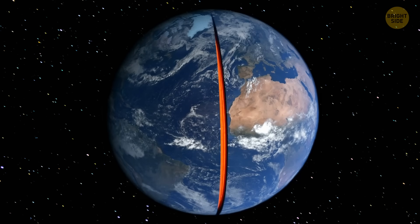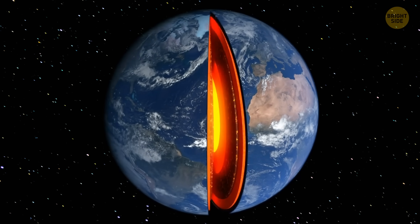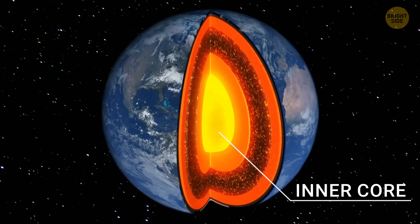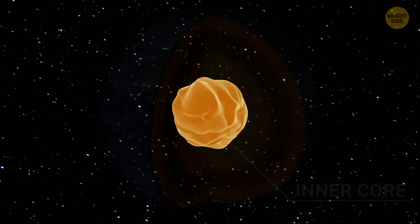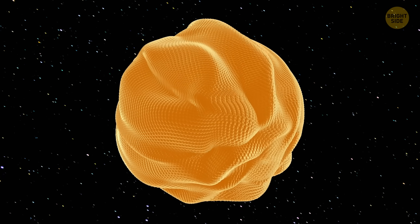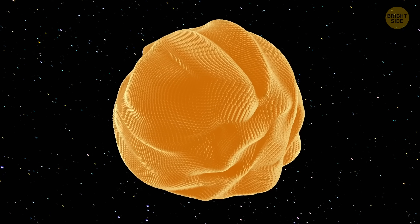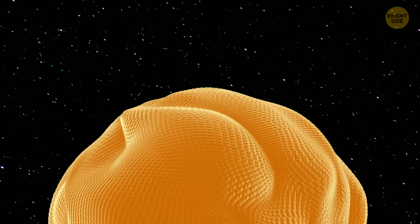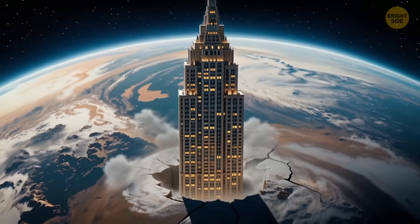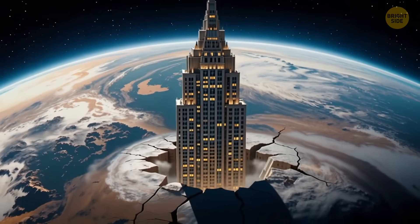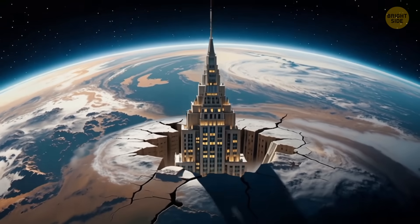Now, let's explore a bit. Deep beneath our feet, there's Earth's inner core. We're used to thinking about it as a perfect solid ball. But new research suggests it might be changing shape. Over the past 20 years, parts of the inner core may have bulged or dipped by more than 300 feet. That's like a skyscraper popping up or sinking deep underground inside the planet.